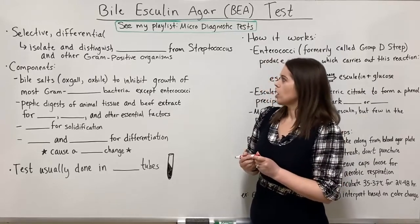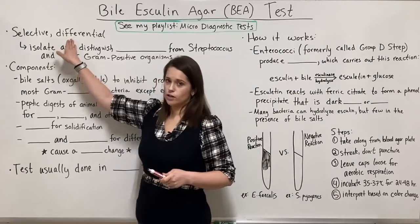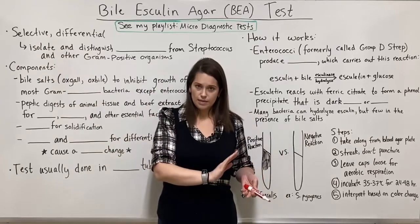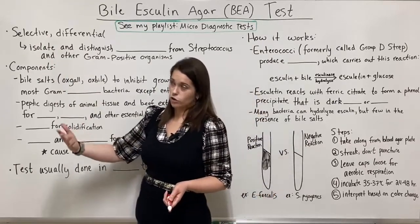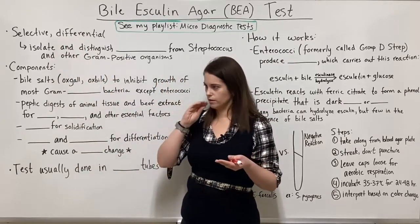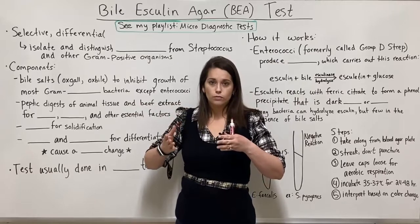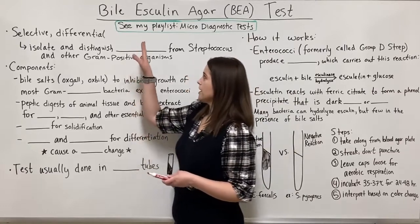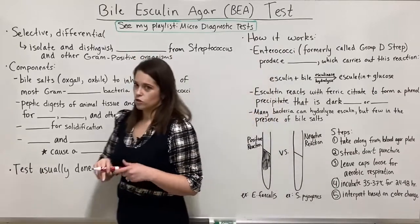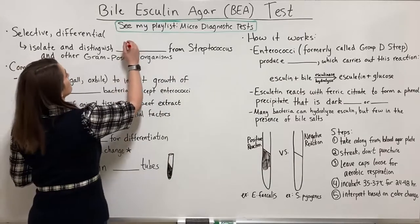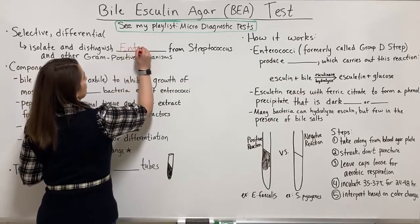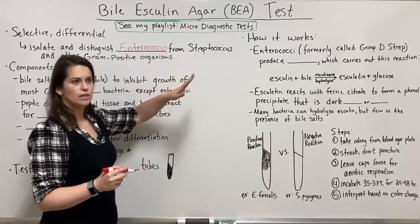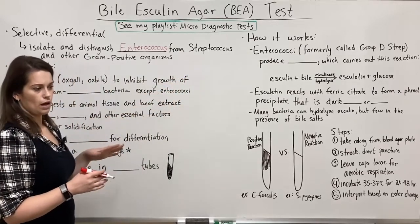Now let's talk about Bile Esculin Agar. It is selective and differential. Selective means that it allows some things to grow while inhibiting others, and then of the things that it allows to grow, the differential aspect means there are ways to observe metabolic differences to distinguish one species from another. In the case of Bile Esculin Agar, it is used to isolate and differentiate Enterococcus species — specifically Enterococcus from Streptococcus species and other gram-positive cocci.